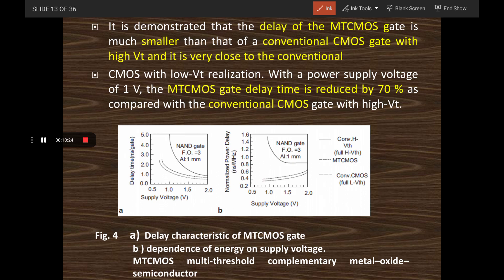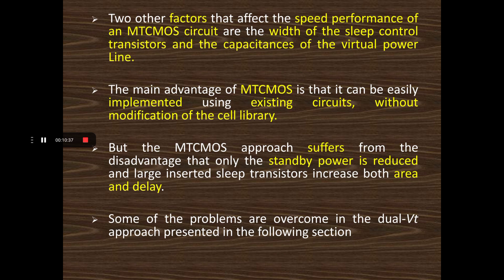MTCMOS gate delay time is reduced by 70% compared to the conventional high VT CMOS circuit, making it a better choice for reducing circuit delay. MTCMOS performance is affected by two important parameters: the speed performance of the internal circuit, and the width of the sleep control transistors as well as the capacitance of the virtual power lines. These parameters must be maintained to ensure proper switching activity.